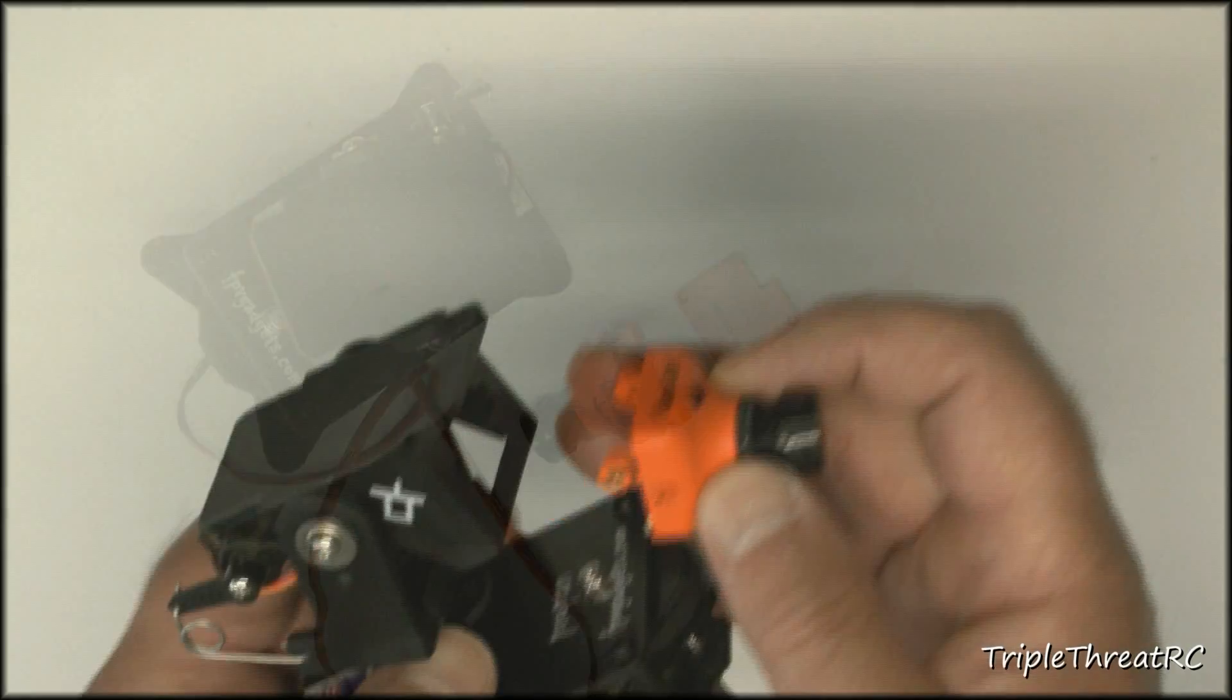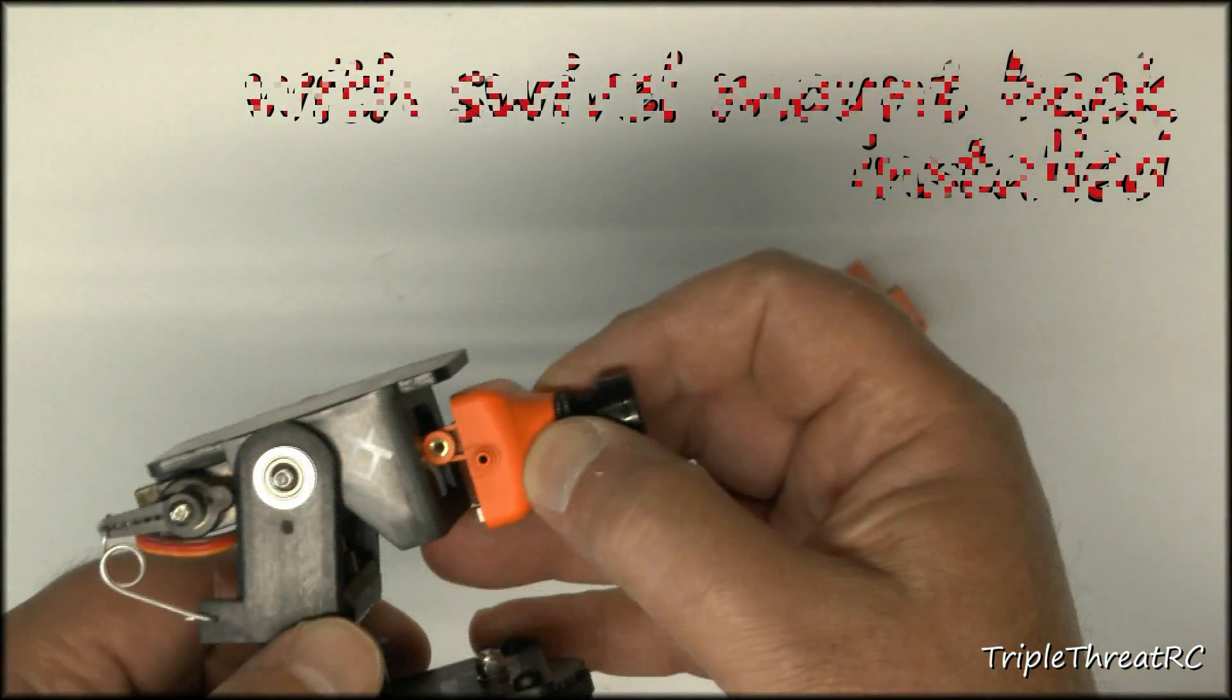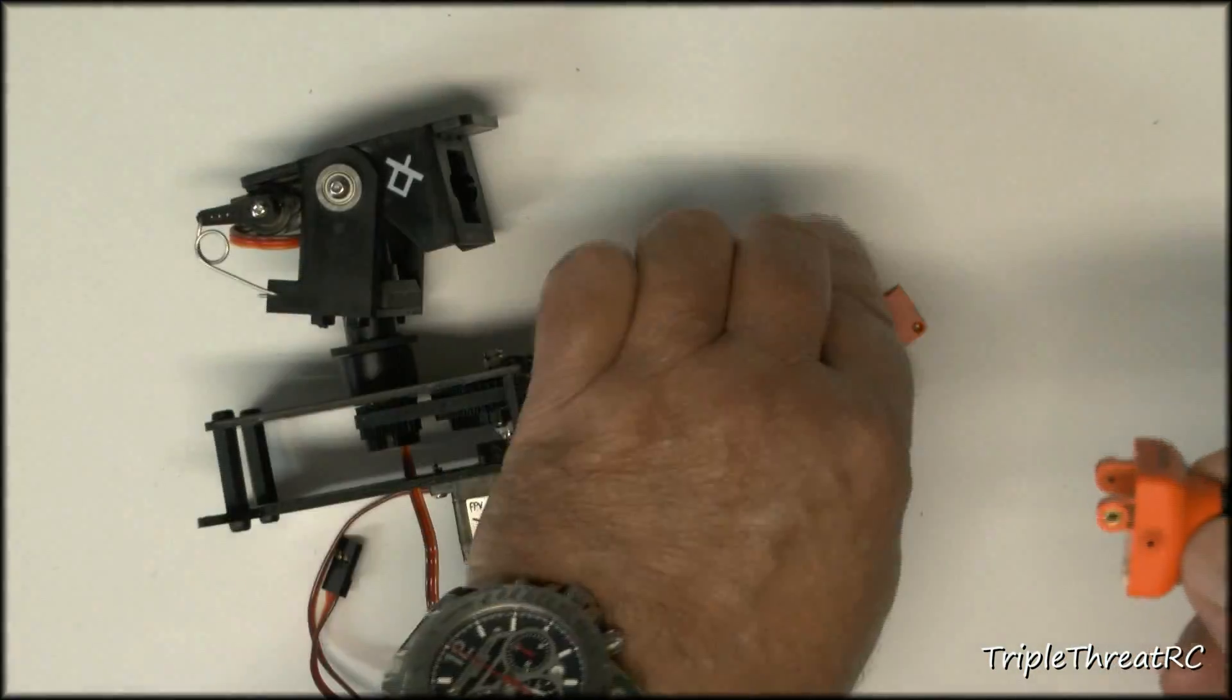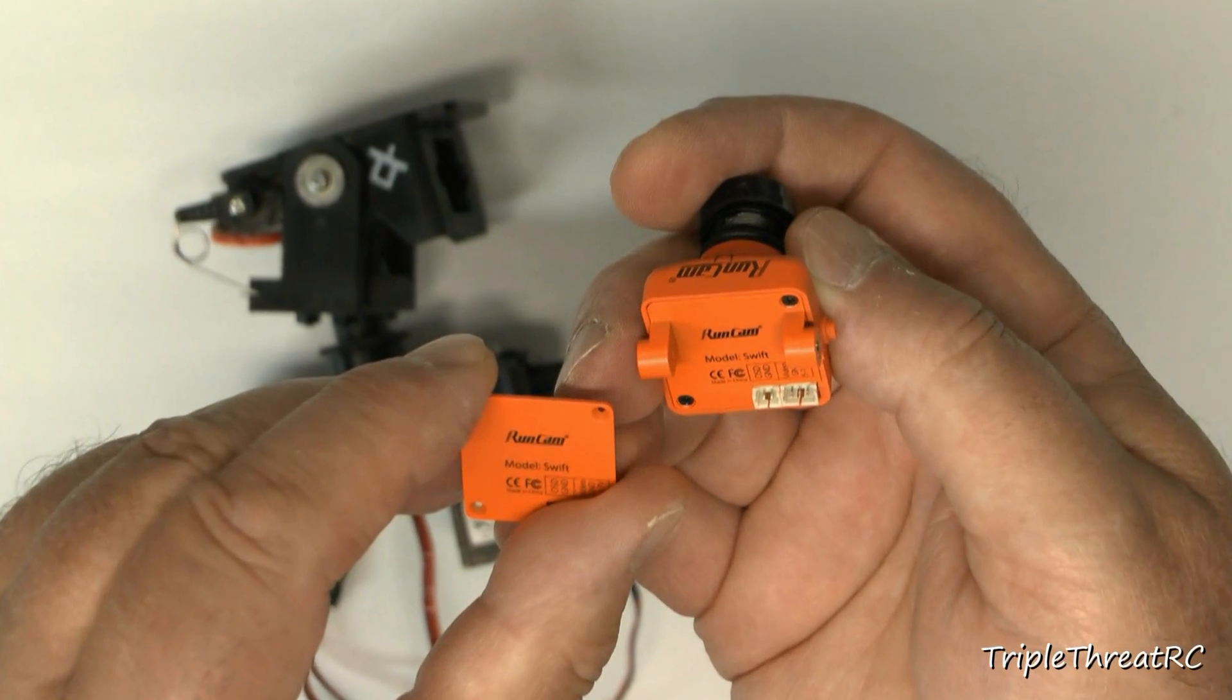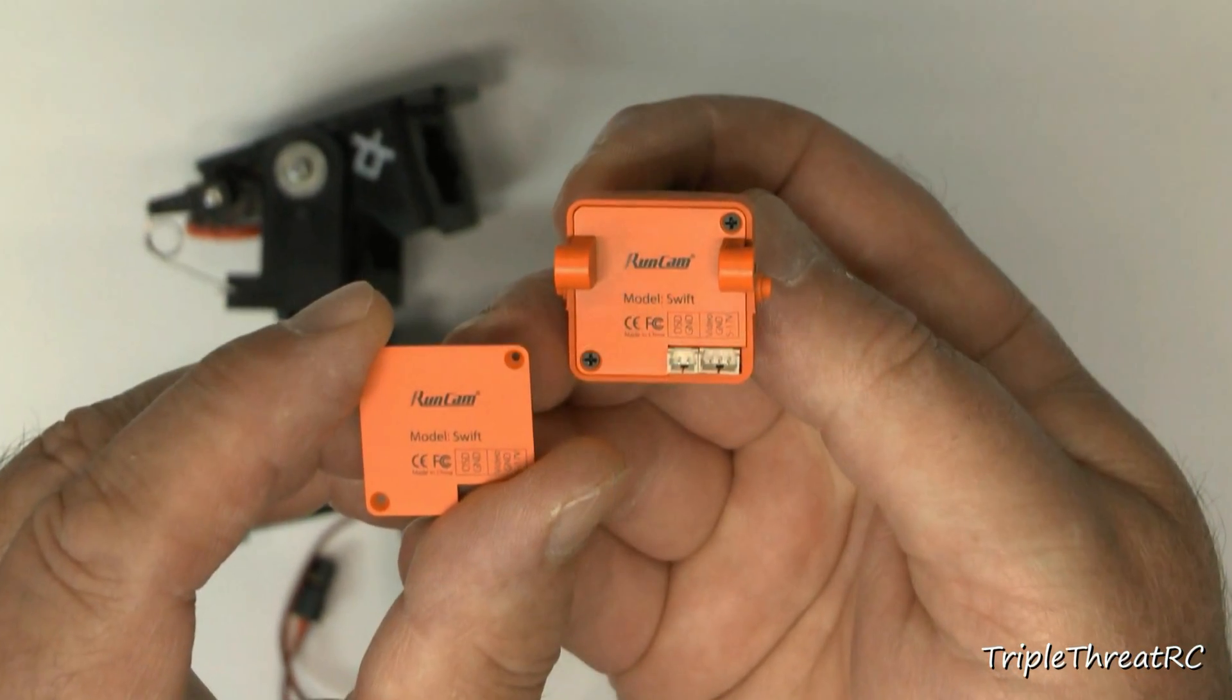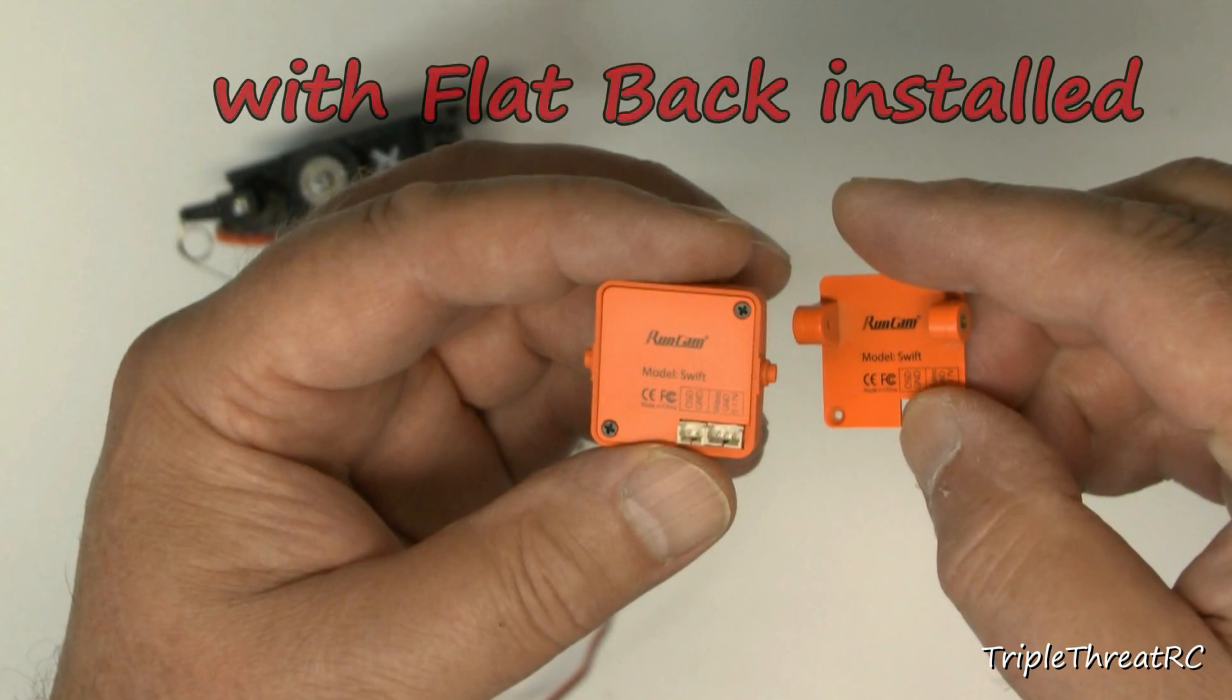The RunCam Swift comes with two backing plates: one with the ears that you can see on here that are designed to be used with the swivel mount, and a flat back that you can use for surface mounting or just different types of mounting applications. Because the ears get in the way of mounting the Swift onto the ProPan, I'm going to go with a flat back.